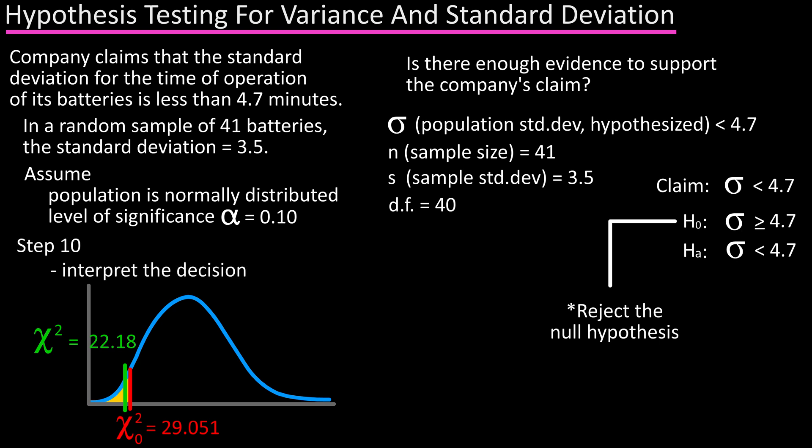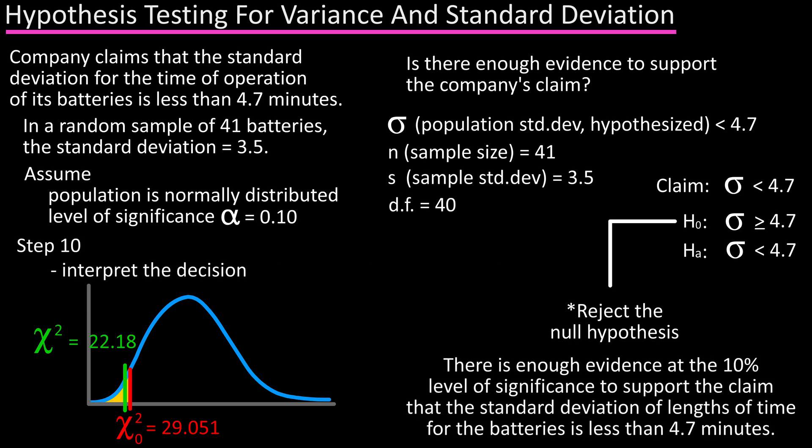Step ten is to interpret the decision. There is enough evidence at the ten percent level of significance to support the company's claim that the standard deviation of the lengths of time of operation for their batteries is less than 4.7 minutes. That covers the basics of hypothesis testing for variance and standard deviation. Hopefully this video helped you out — I have more statistics videos available. Till next time!